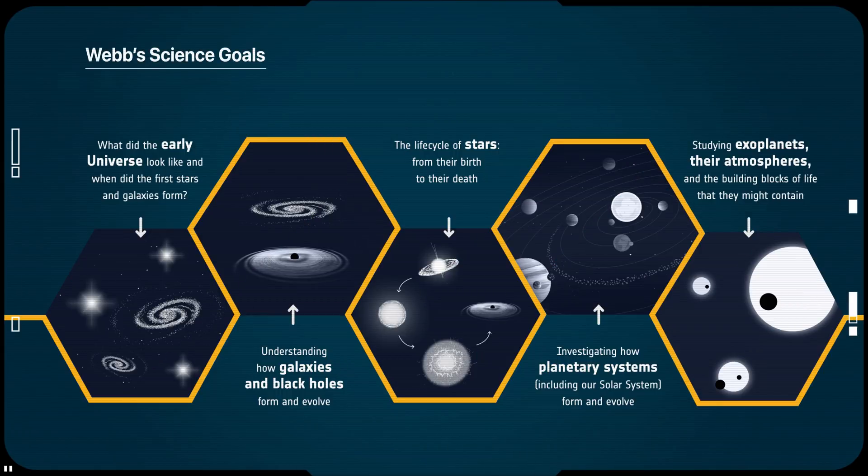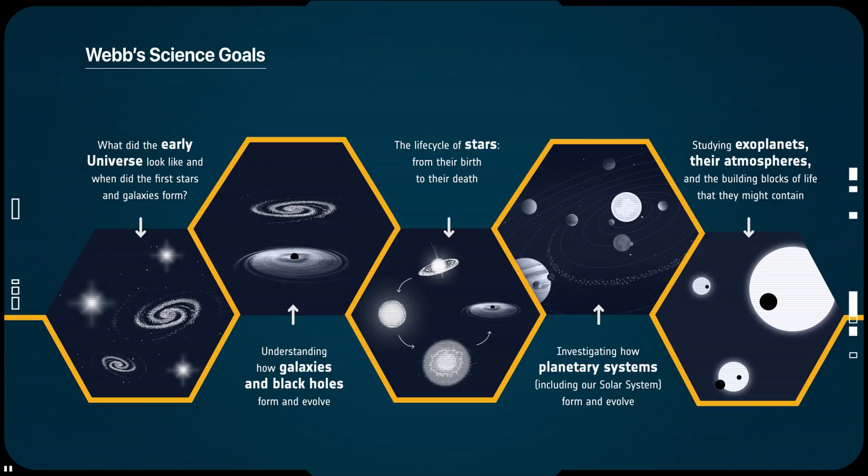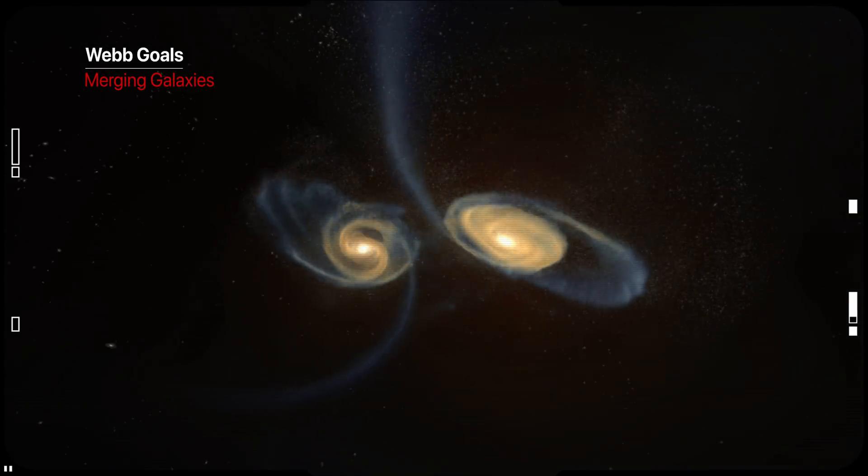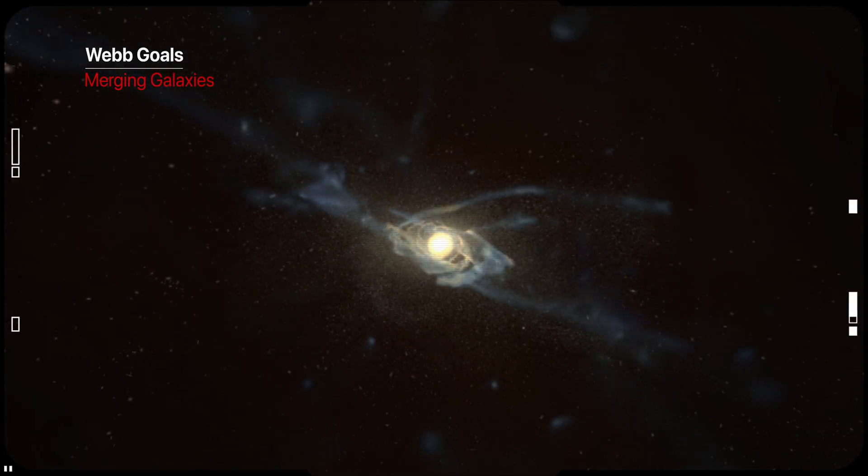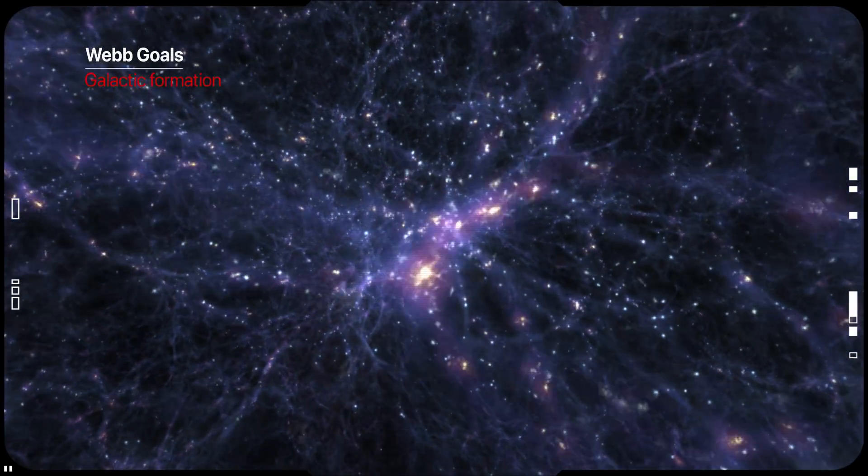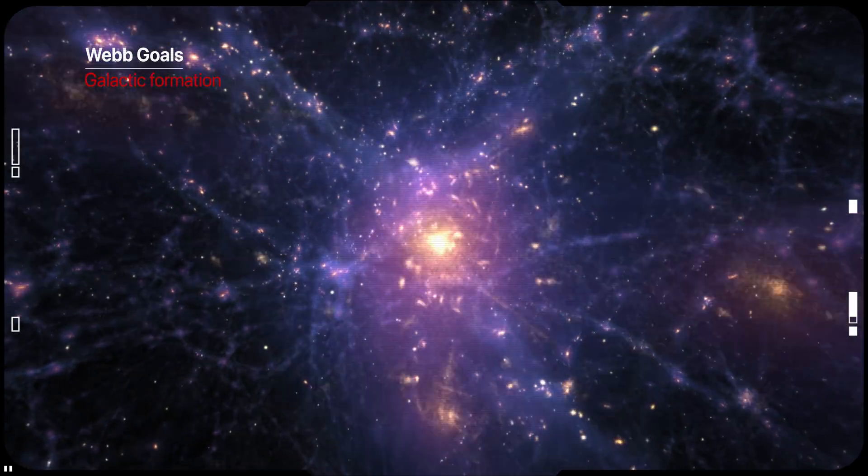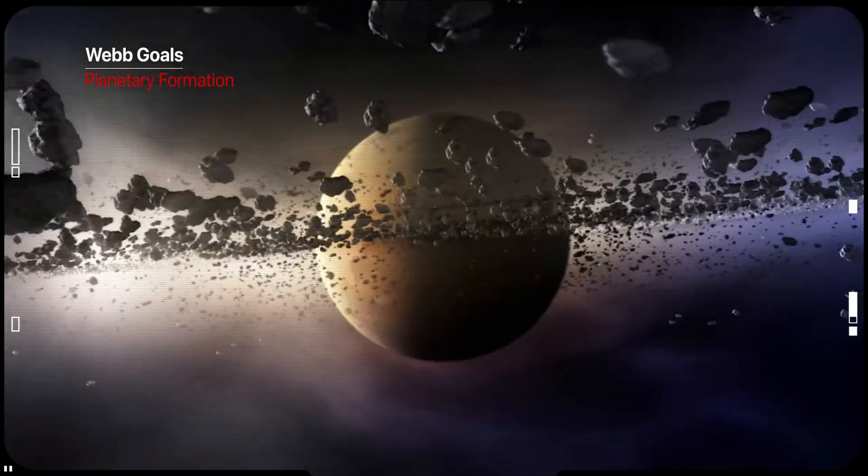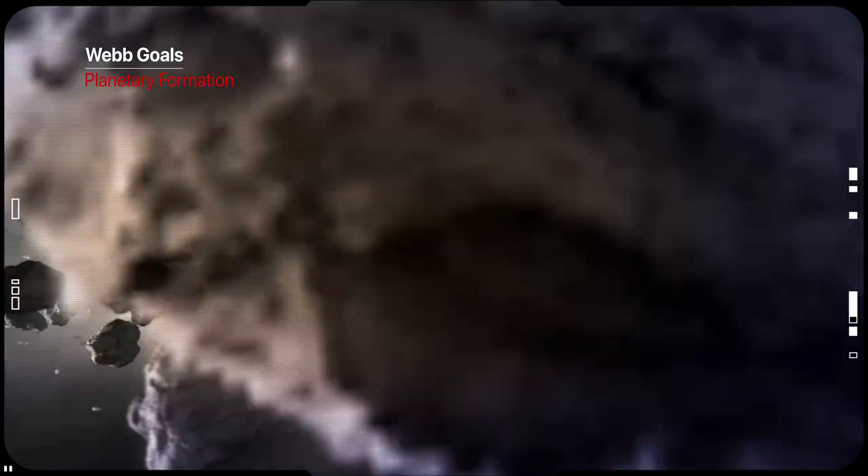The primary goals of Webb are to study galaxy, star and planet formation in the universe, to see the very first stars and galaxies that formed in the early universe, to look deep into space, to look back in time, because it takes time for light to travel from there to here, so the farther out we look, the further we look back in time.